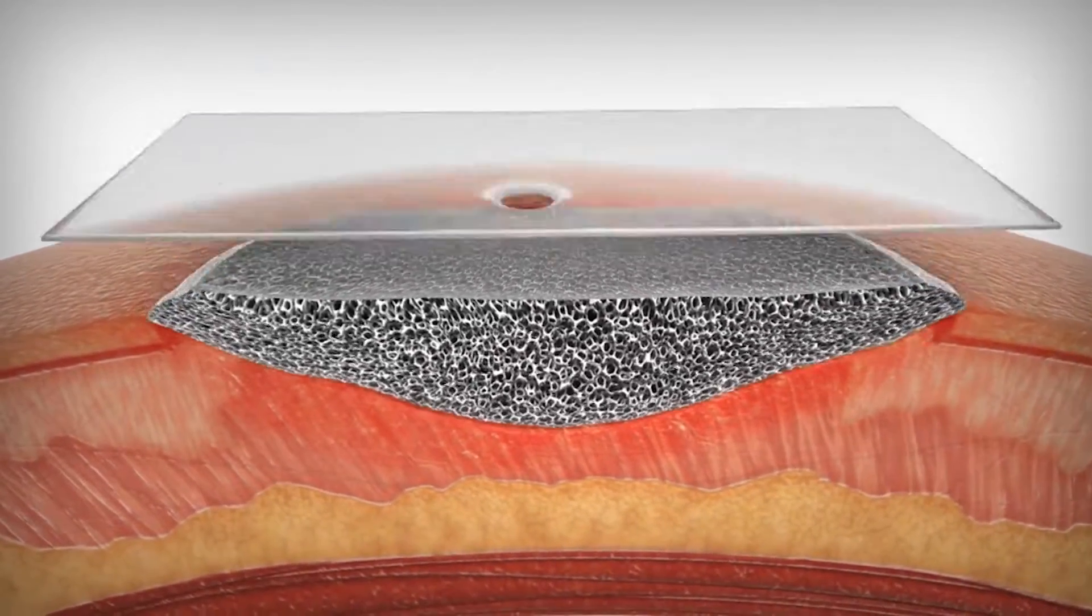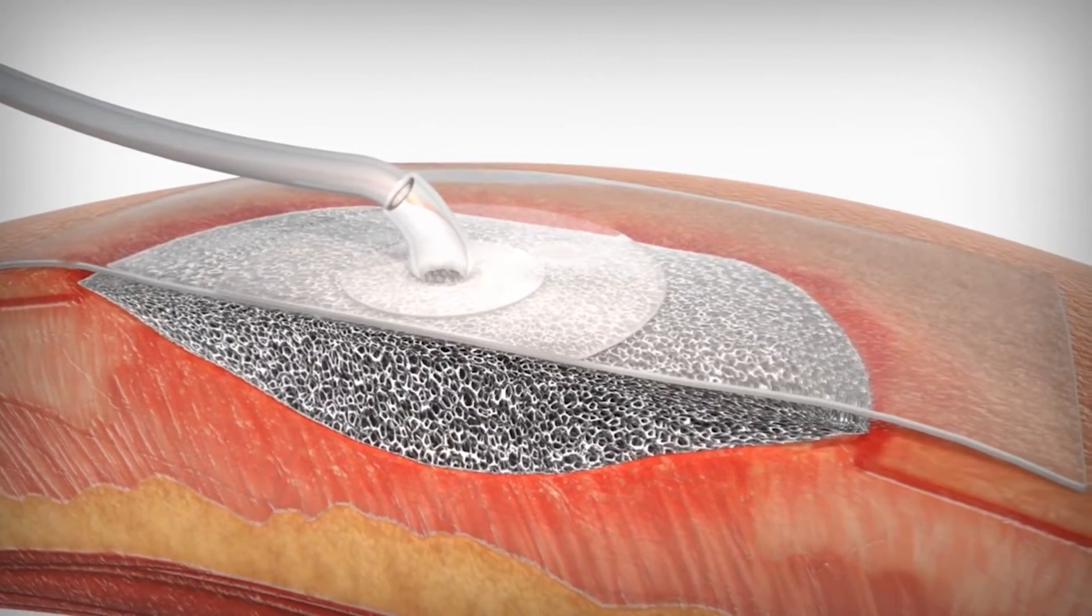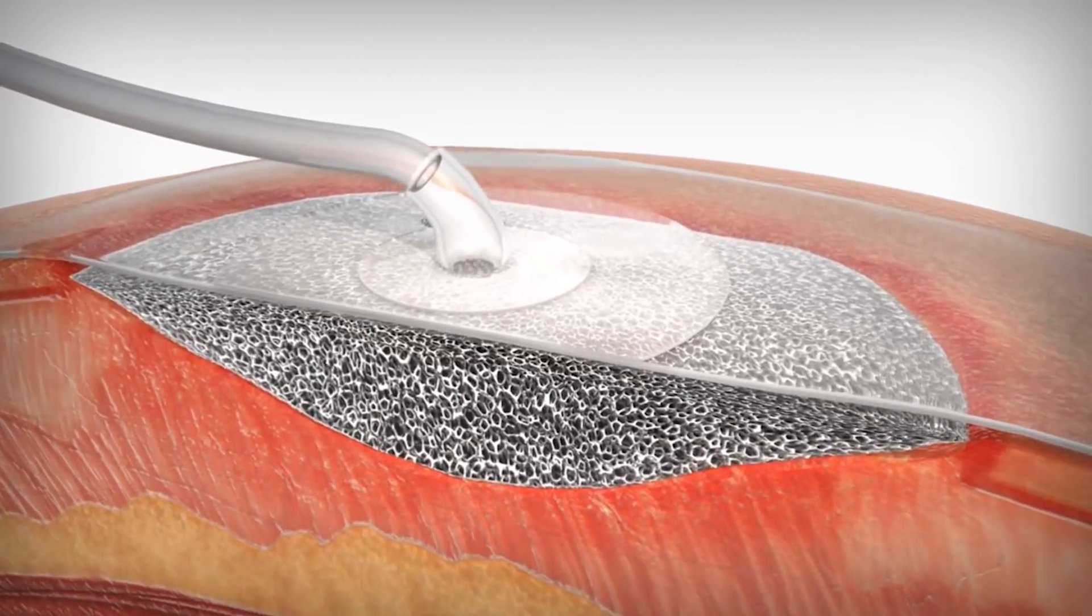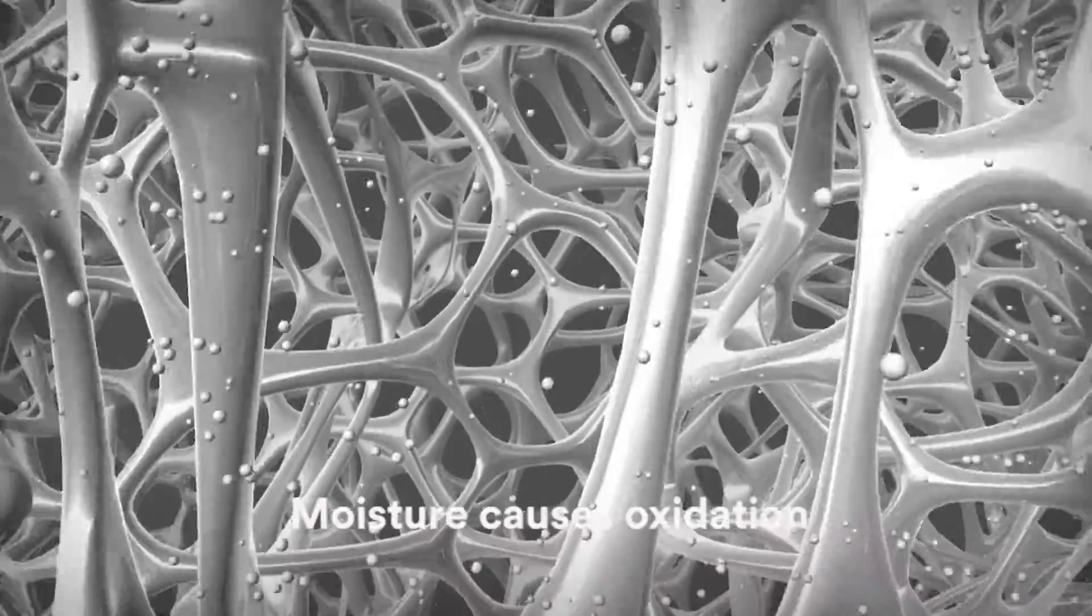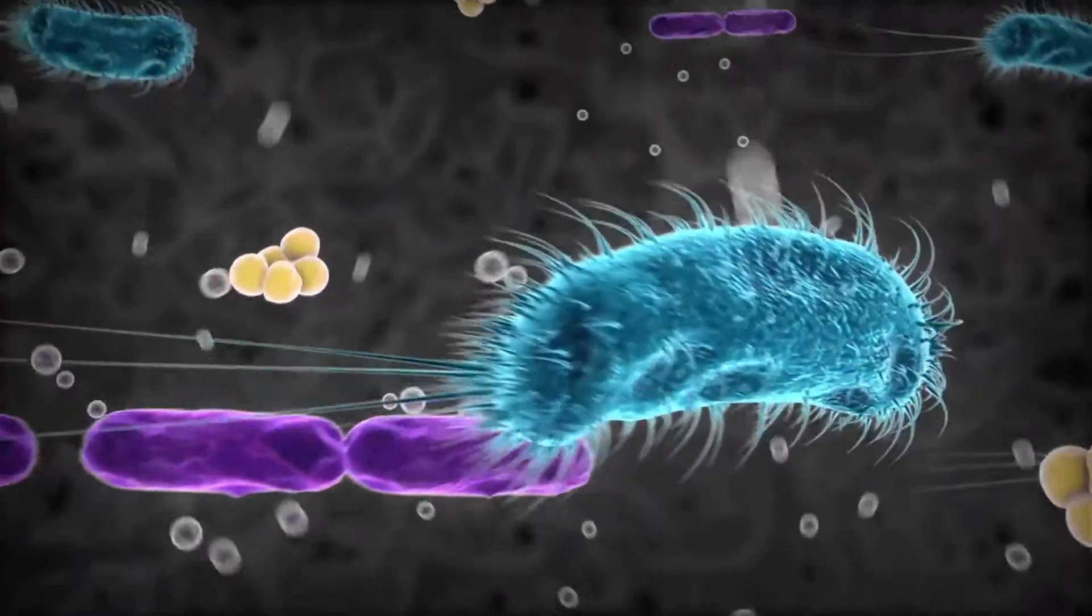Exposure to wound exudate causes the silver atoms on the surface of the VAC GranuFoam Silver dressing to oxidize, forming silver ions. These silver ions are the basis for antimicrobial protection. The positively charged silver ions are attracted to negatively charged bacteria.